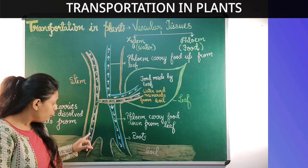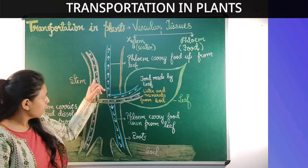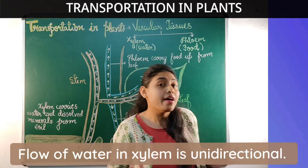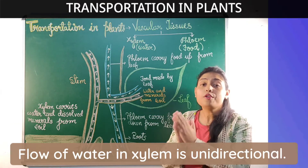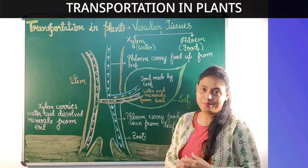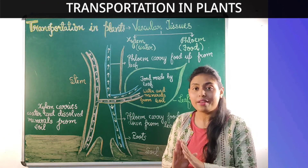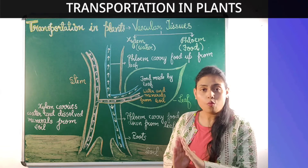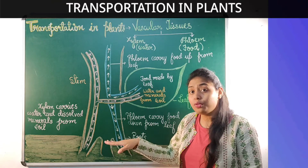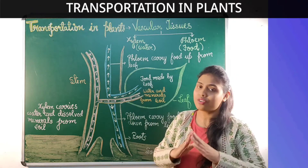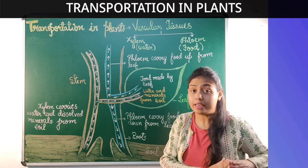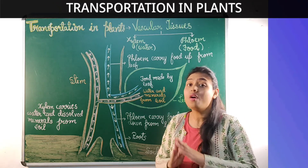Now let us see the direction or the flow of water in xylem. The flow of water in xylem is always unidirectional — that means the water flows only in one direction, which is the upward direction. This is why we say that xylem transports water in one direction.